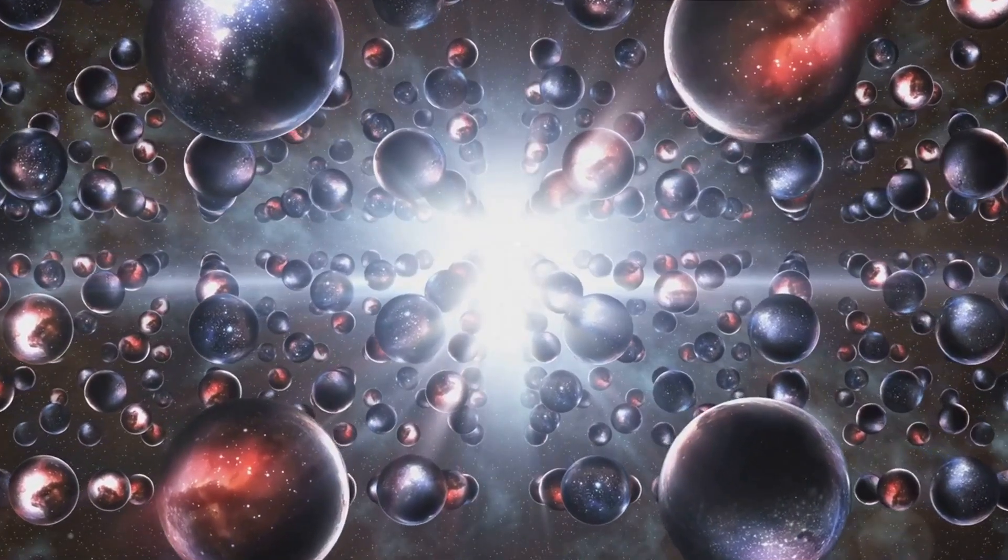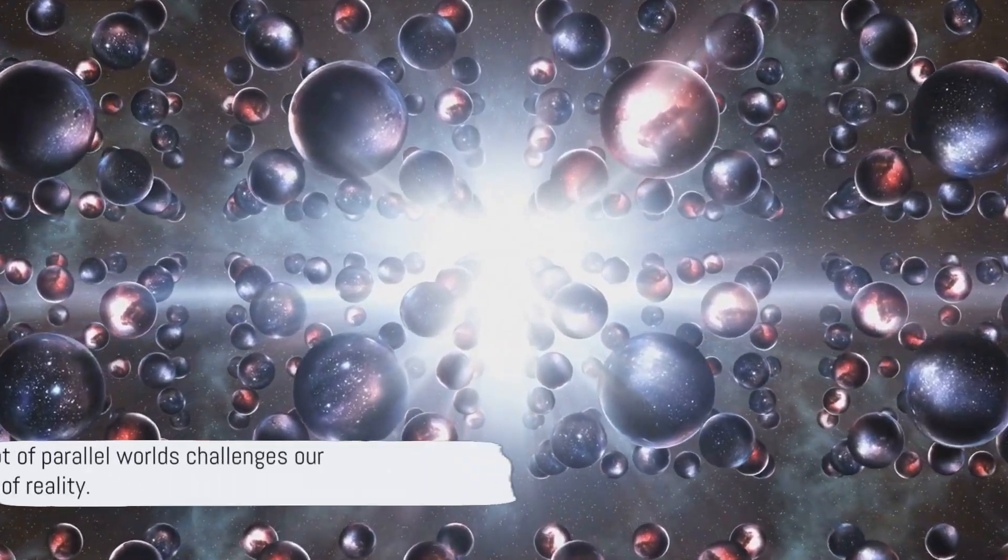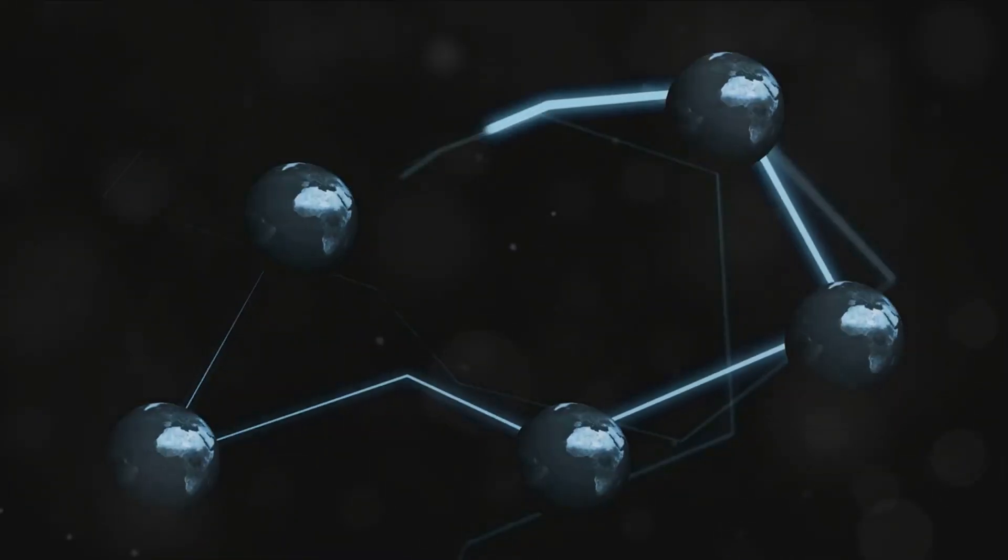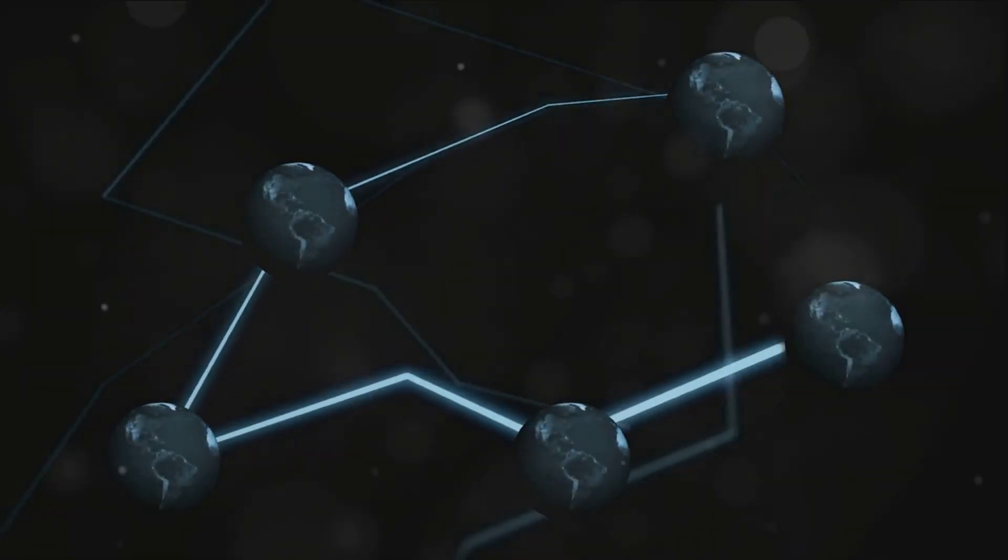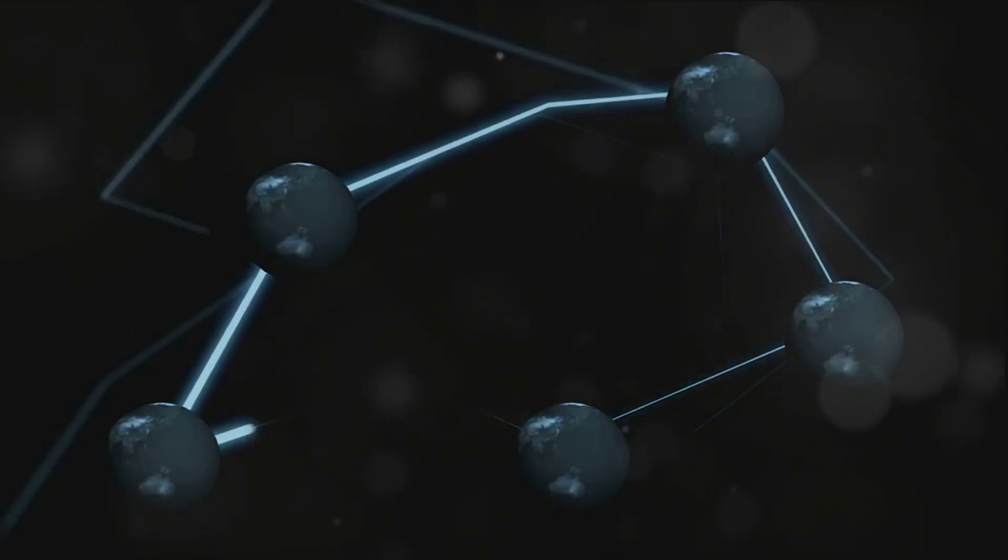Think of it as an endlessly branching tree, each branch representing a different potential reality. Everything that could be, is. Every possible outcome of every event does not merely happen in some realities, it happens in all. But this concept isn't limited to mere human experiences. According to this theory, every single quantum event, from the tiniest particle interaction to the colossal cosmic explosions, spawns a parallel world. This radical idea fundamentally challenges our perception of reality.